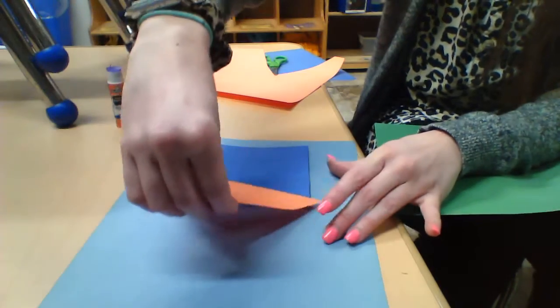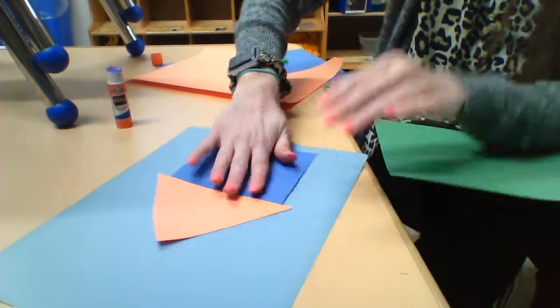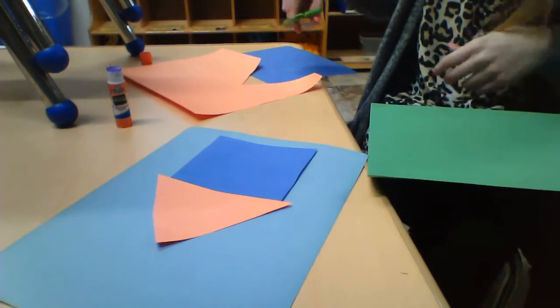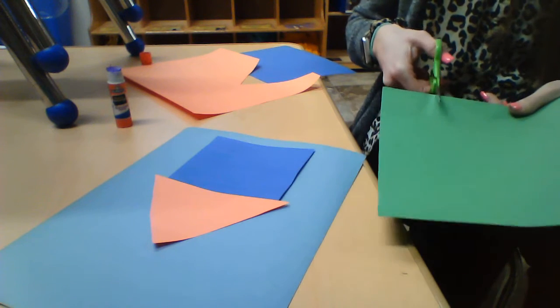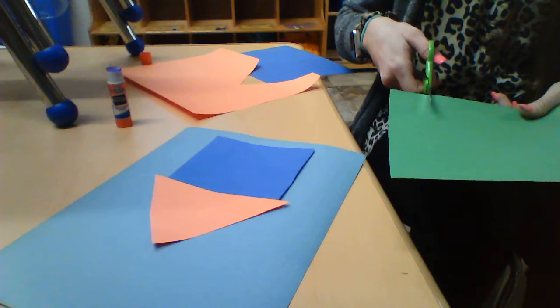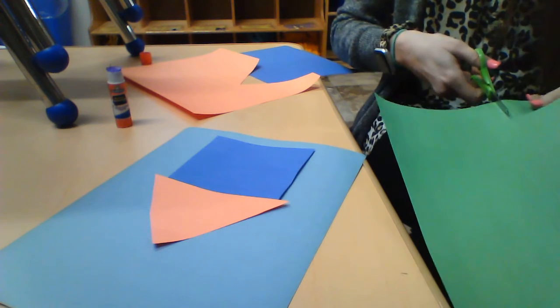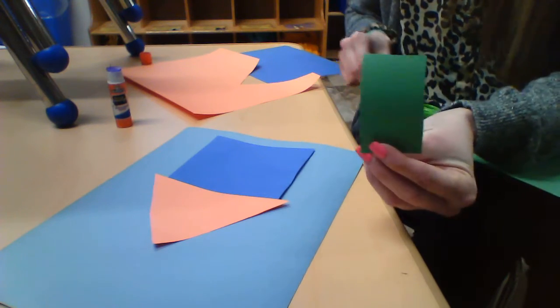Now that I have a house, we definitely need a door so we can get inside. I'm going to use my green sheet of paper and cut it a little smaller. I'm going to cut out a small rectangle for my door.